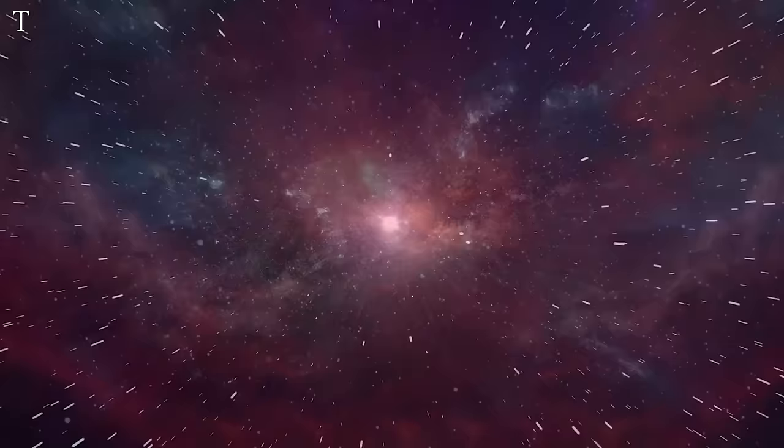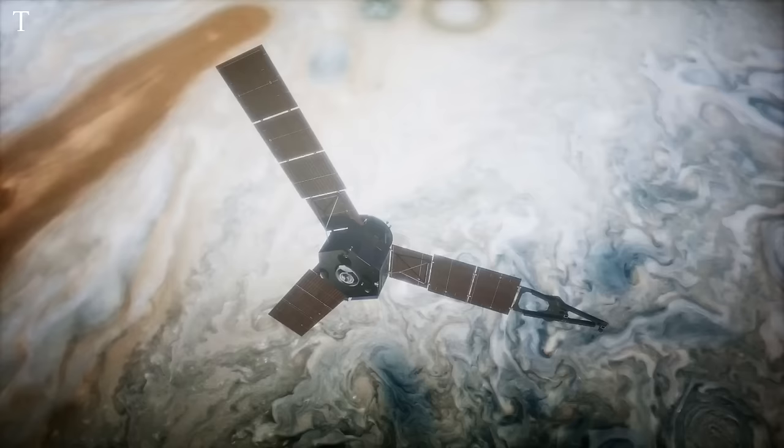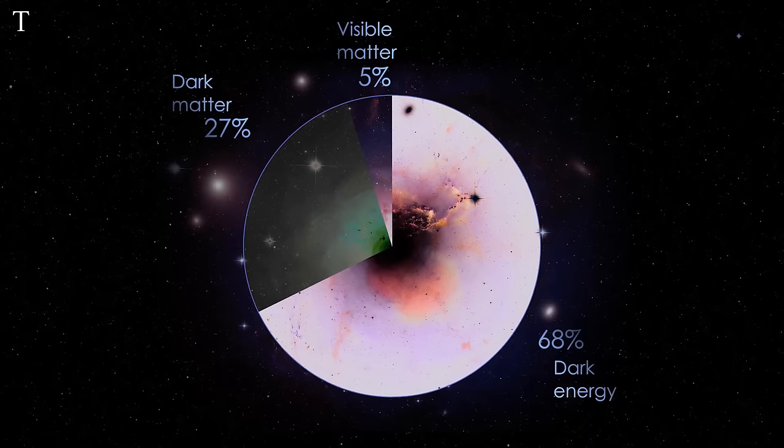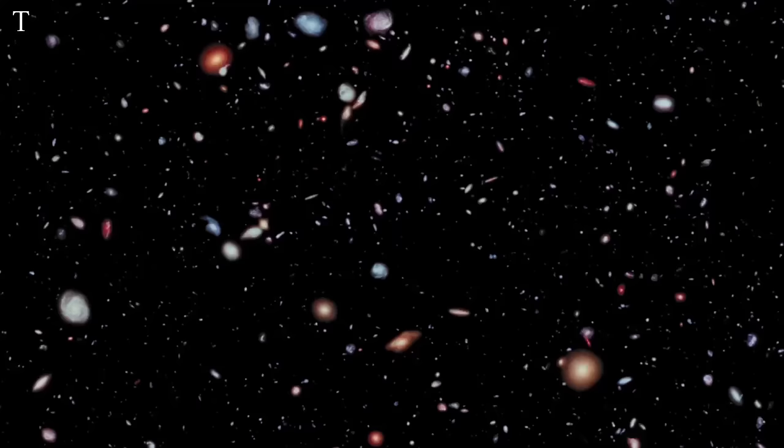The Standard Model today holds that normal matter, the stuff that makes up you, me, and planets, and everything else we can see constitutes only about 4% of the universe. The rest is invisible stuff called dark matter and dark energy occupying roughly 27% and 68% of the universe, respectively. And then comes cosmic inflation, an example of yet another exotic adjustment made to the Standard Model, devised in 1981 to resolve paradoxes arising from an older version of the Big Bang.